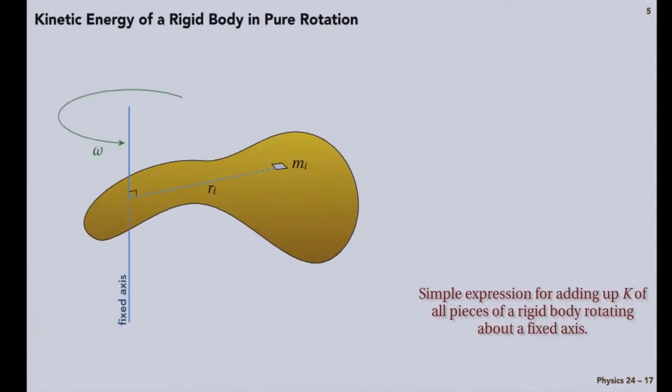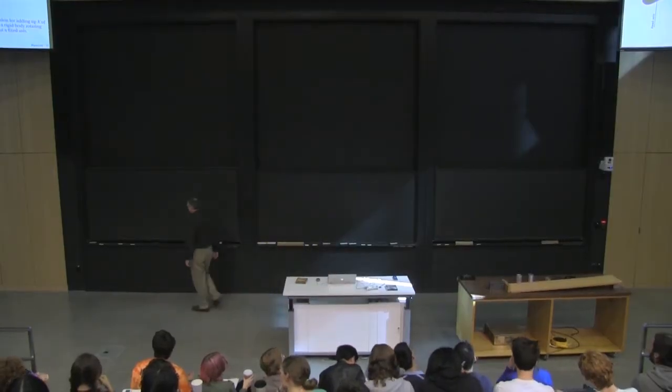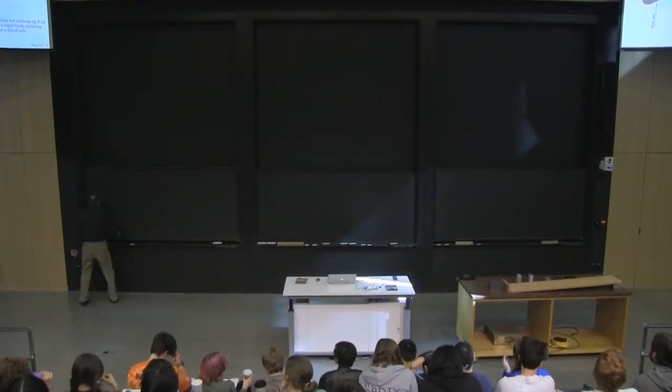So now I want to consider a body that is rotating, same rigid body that rotates about a fixed axis. So we're going to build this up step by step.